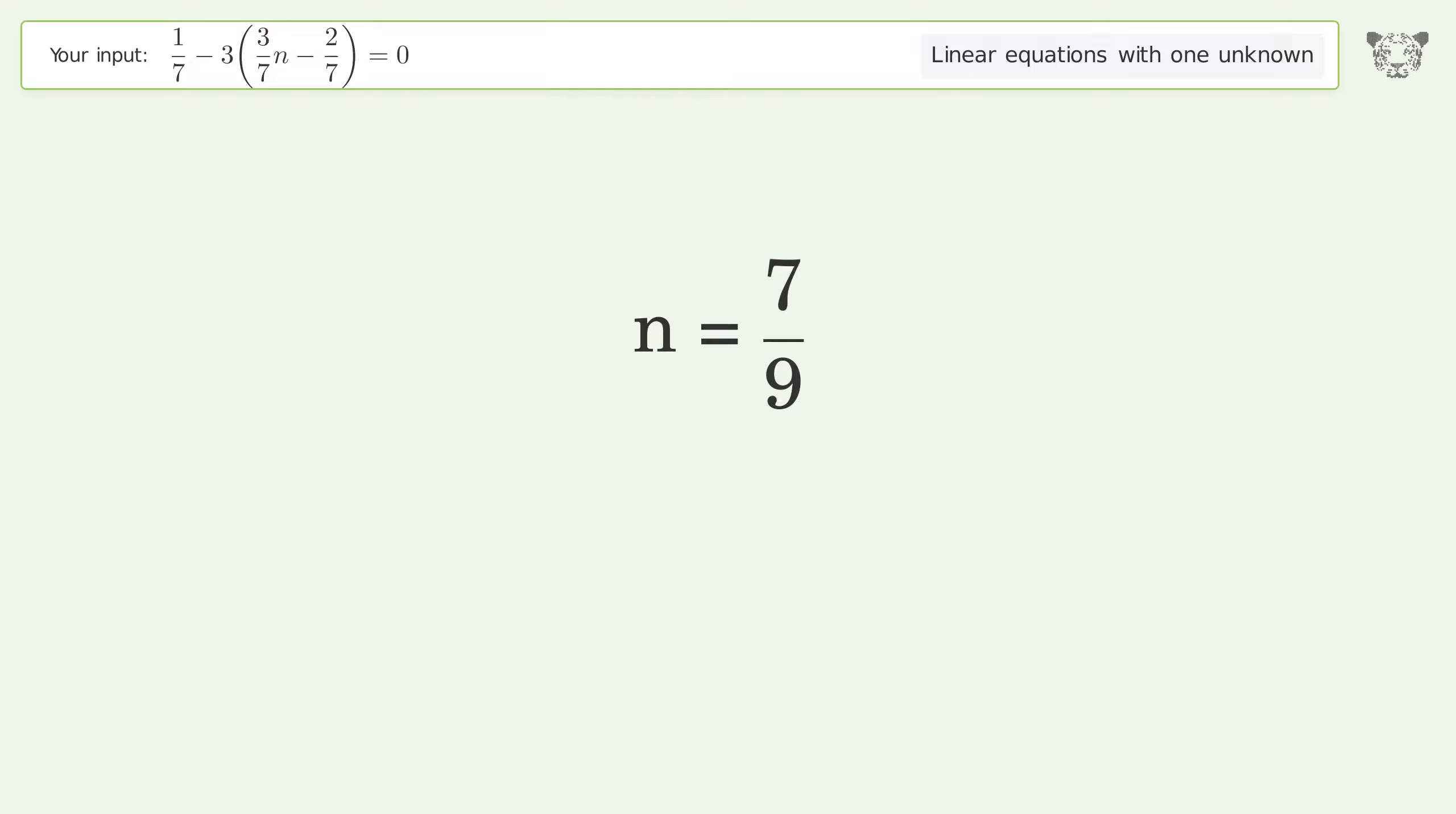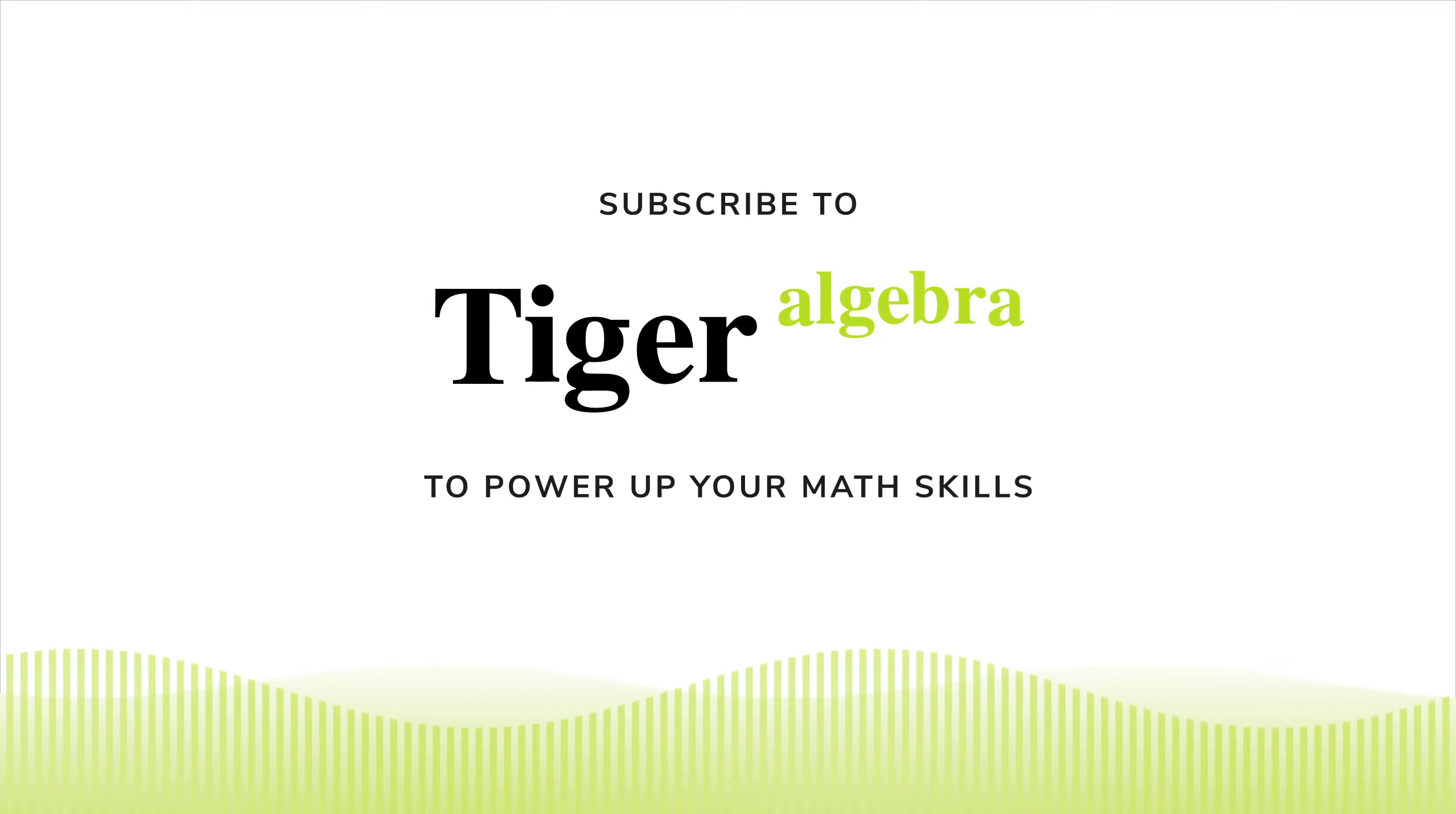And so the final result is n equals 7 over 9.